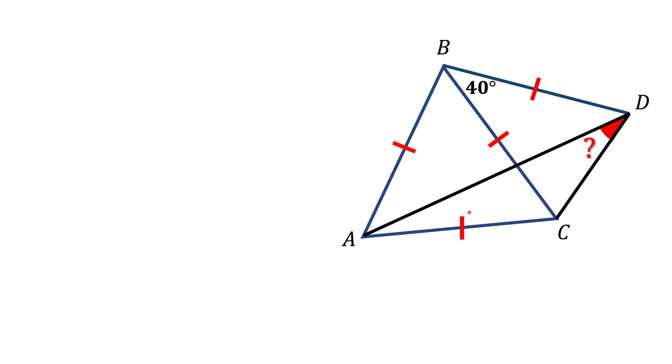Here we have an equilateral triangle ABC, and we also have a segment BD which has the same length as the sides of the equilateral triangle. We know that angle CBD is 40 degrees, and we're asked to find the measure of this red angle ADC.